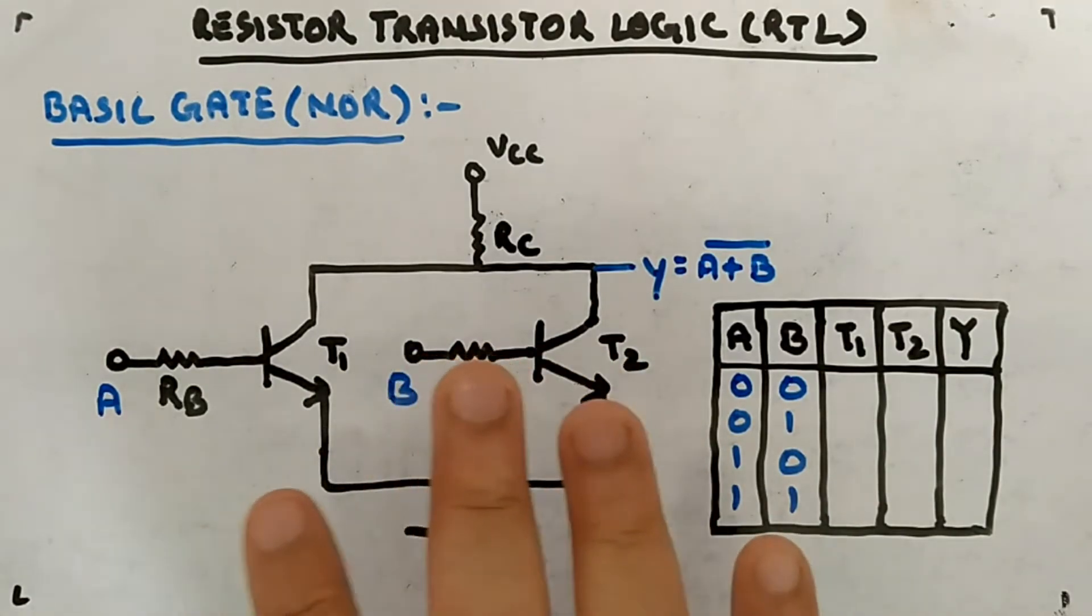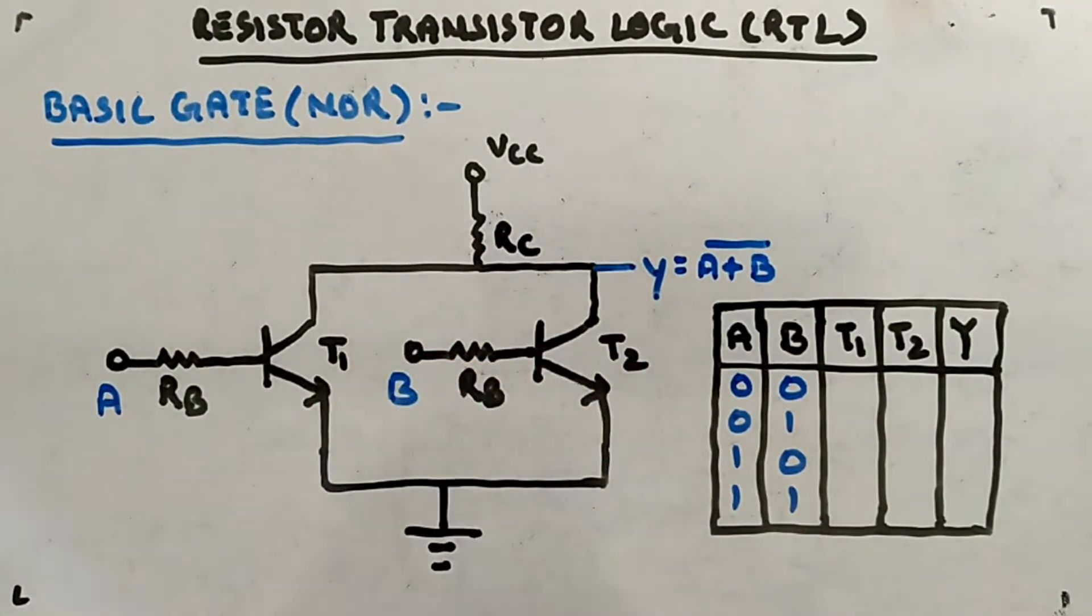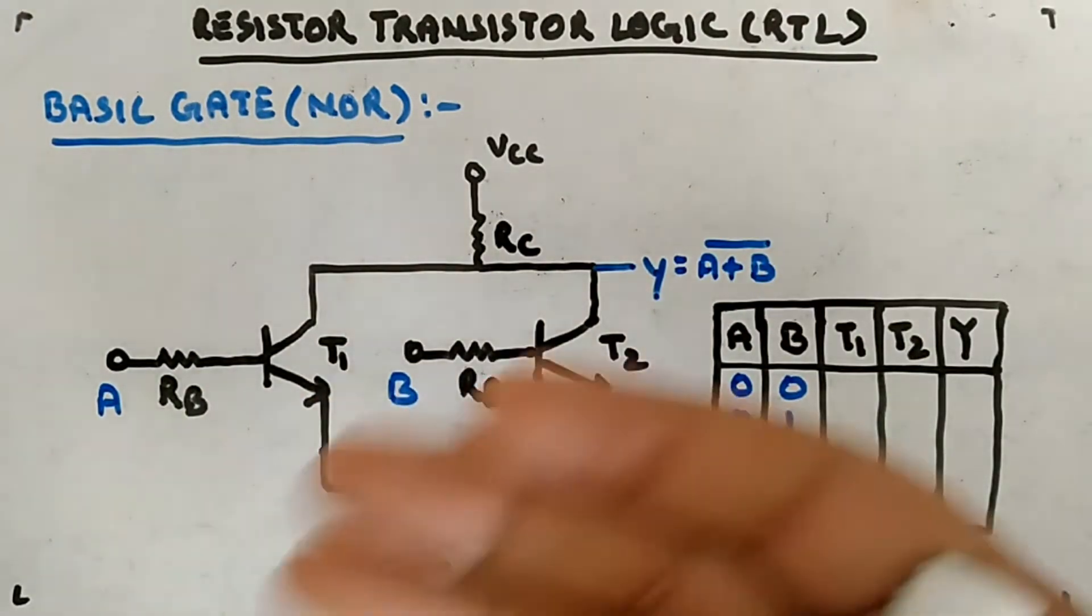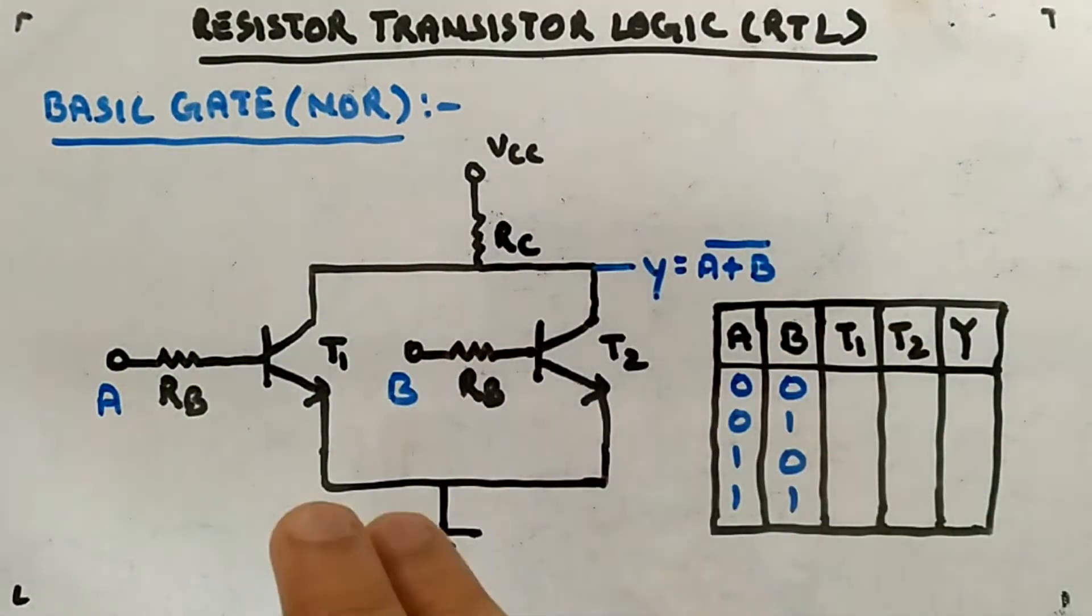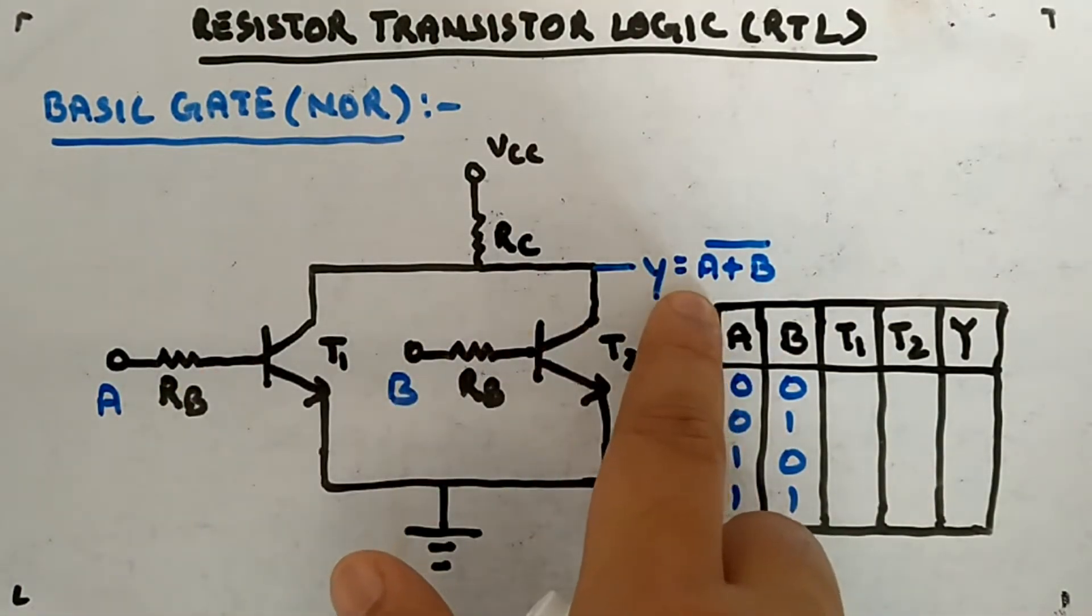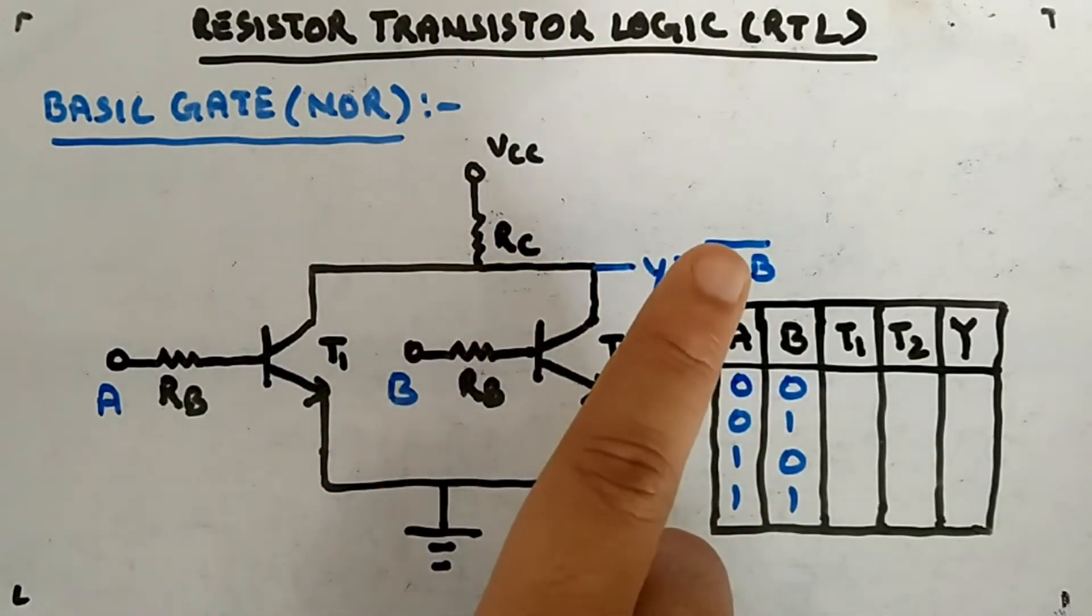Vcc, ground, Rb, Rb, Rc, transistor T1, transistor T2 - this is how they are connected in parallel. These are standard circuits you should be knowing. In RTL, this is the NOR gate, the basic gate. You have two inputs A and B, and output is A+B bar, that is NOR output.